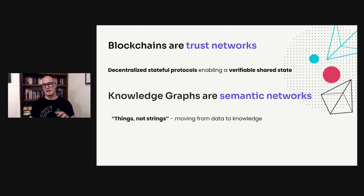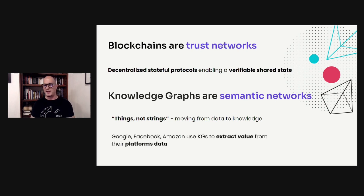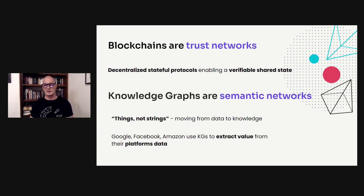Just as blockchains are trust networks, knowledge graphs are semantic networks. That means we're no longer talking about strings — we're talking about things. We're moving from raw data to highly structured knowledge. Companies such as Facebook, Google, eBay, and Amazon — all of these Web 2 giants — have been using knowledge graphs, or KGs, to extract value from their platform's data. Amazon uses it for recommendations, Google uses it for search, all on this layer of semantic, machine-readable and machine-understandable data.